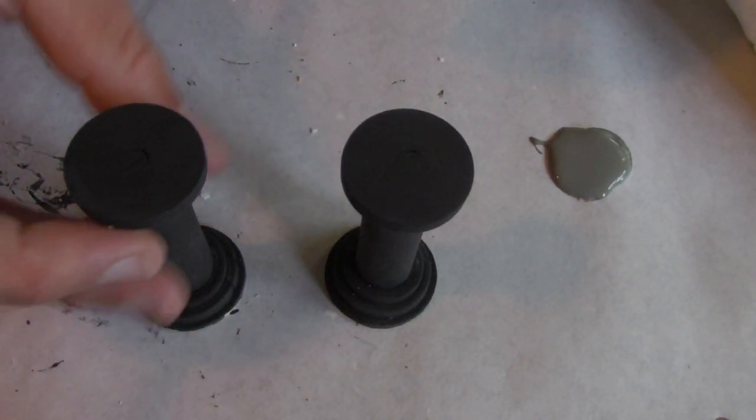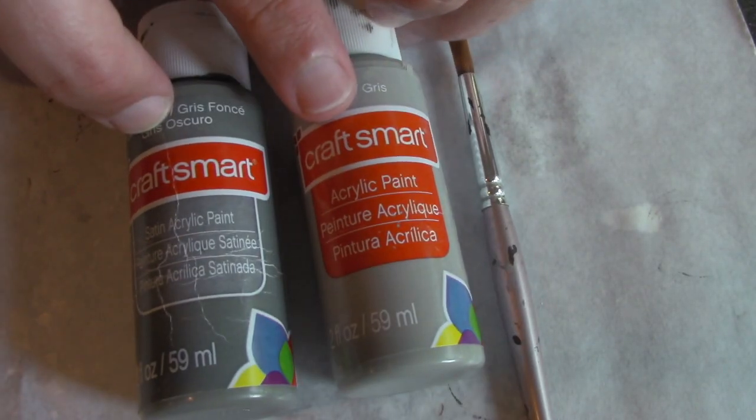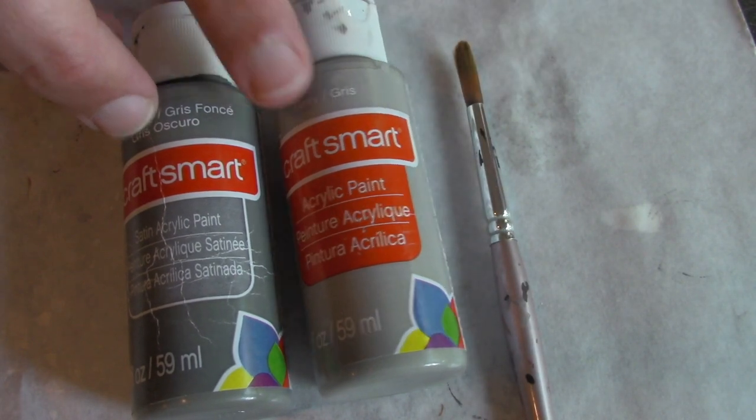Here they are a couple hours later and it's pretty smooth. So to paint these I'm going to use dark gray, a medium gray, and an old brush because we're going to be dry brushing.